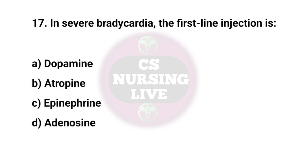Question No. 17. In severe bradycardia, the first line injection is? Right answer is B. Atropine.